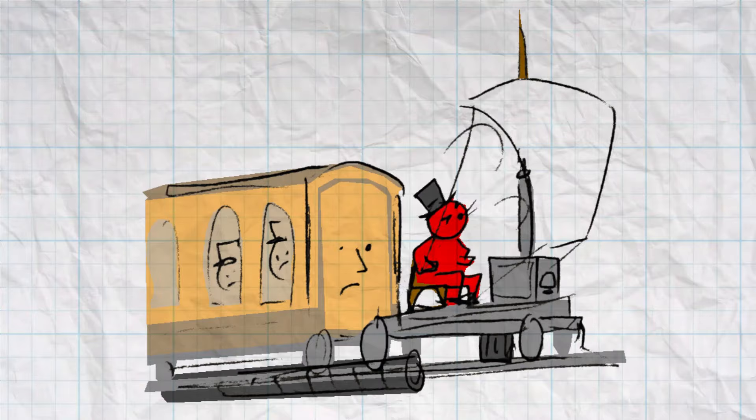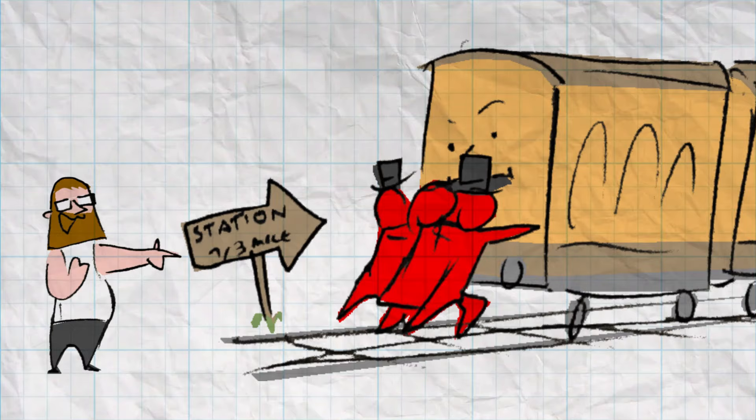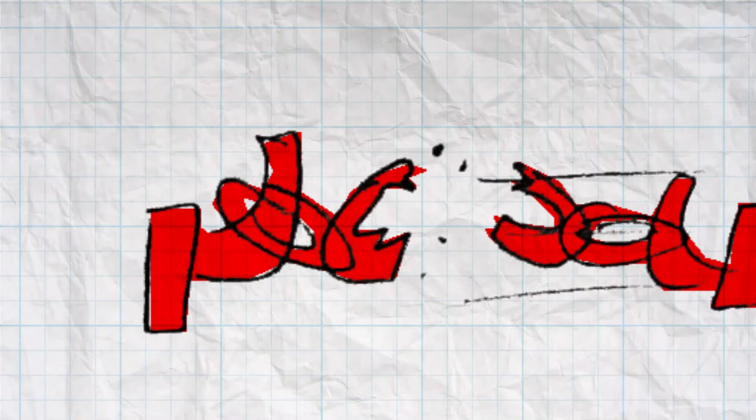No, what actually happened is that then the passengers had to get off and push. There was one incident where the pneumatic locomotive was accidentally uncoupled from the train. Oh good. And it shot off at high speed.